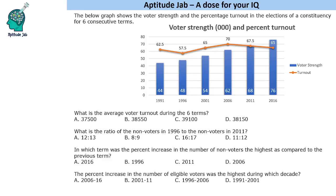Hello everyone, welcome to Aptitude Jab. This is a calculation-based DI based on a bar graph and a line graph. The graph shows the voter strength and the percentage turnout in the elections of a constituency for six consecutive terms, 1991 to 2016. The elections are held every five years. The bar graph shows the voter strength in thousands and the line graph in orange gives the turnout percentage.